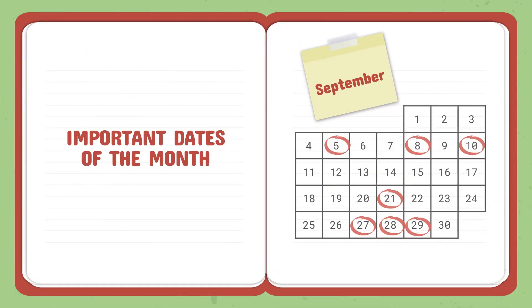These are the important dates of the month September. These are 5, 8, 10, 21, 27, 28, 29. Let us learn in detail.